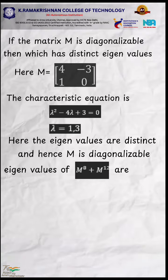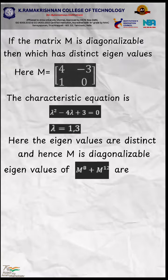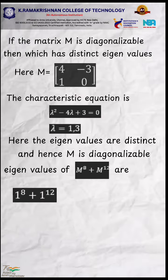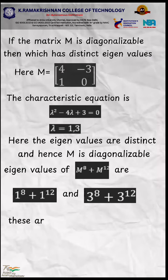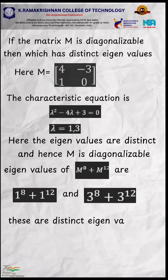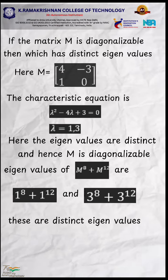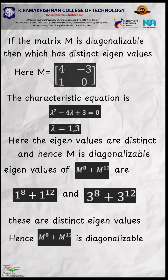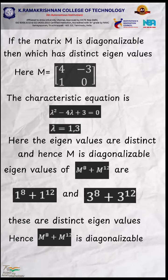The eigenvalues of M power 8 plus M power 12 are 1 power 8 plus 1 power 12, and 3 power 8 plus 3 power 12. These are distinct eigenvalues, hence M power 8 plus M power 12 is diagonalizable.